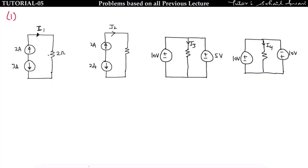Let's proceed to the first problem. You have to find the current i1, i2, i3, and i4 in each branch. Please pause this video and solve it with your own method, then see my method — only then you will be able to learn and analyze your mistakes.